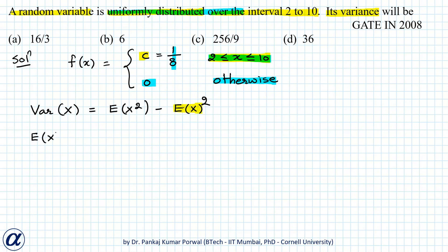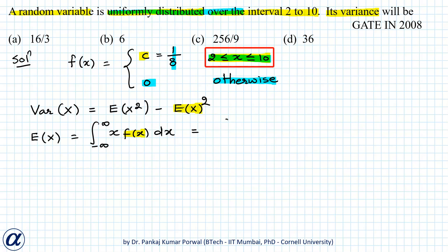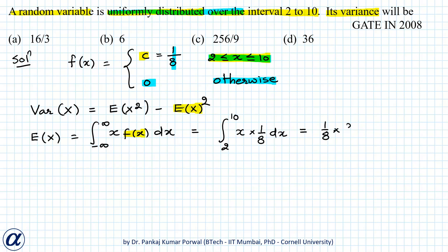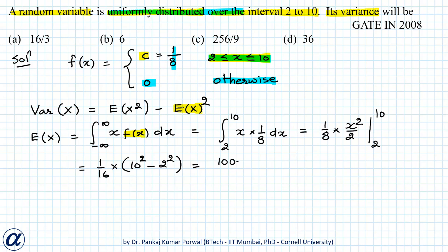E[X] is the integral from minus infinity to infinity of x·f(x) dx, and here because f(x) is non-zero only over the interval 2 to 10, this integral becomes the integral from 2 to 10 of x·(1/8) dx. Integrating, I get (1/8)·(x²/2) evaluated from 2 to 10, which gives (1/16)·(10² − 2²) = (100 − 4)/16 = 96/16 = 6. So the expected value of x is 6.